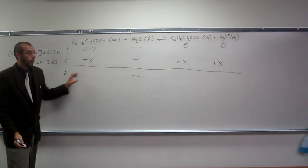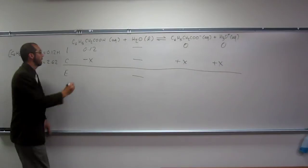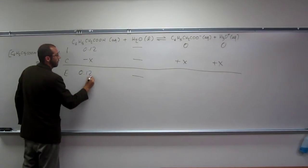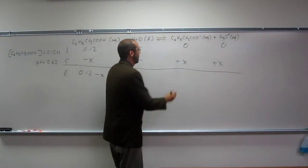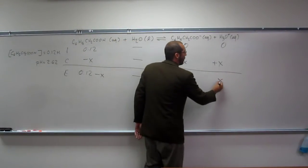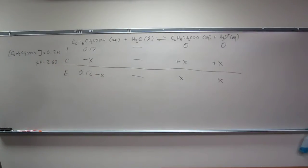So what's going to be the equilibrium? Remember, the E is equilibrium concentration. It's going to be 0.12 molar minus X for that one. Here we're going to be X, and here we're going to be X. Is everybody okay with doing that so far?